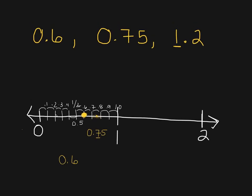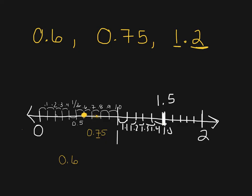One and two tenths — we're working with a number that is more than one this time. We have tenths, meaning we need ten equal spaces between the one and the two. Here's halfway between one and two, which is one and a half. Now we need equal spaces between one and one and a half, and between one and a half and two. Starting from the one: 1.1, 1.2, 1.3, 1.4, 1.5. And one and two tenths is going to be right here at 1.2.